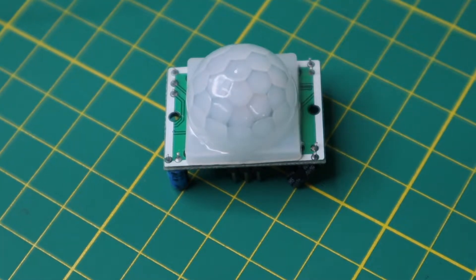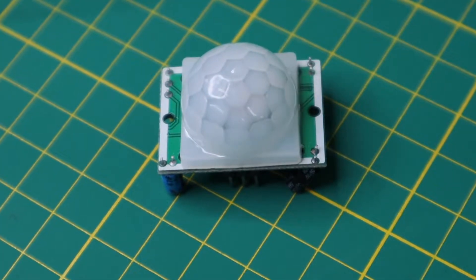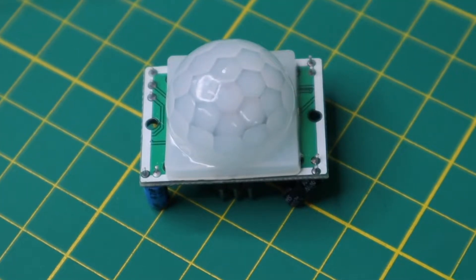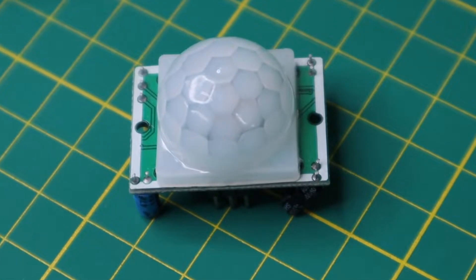This is a PIR sensor, specifically an Elegoo HC-SR501. We can use a PIR sensor in our projects to detect motion.